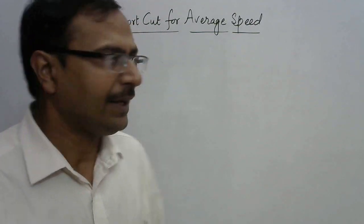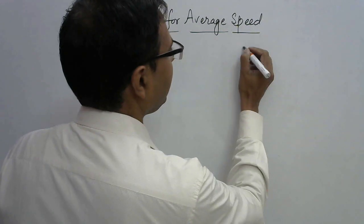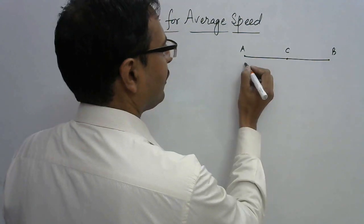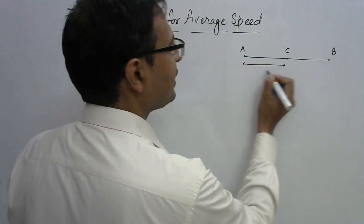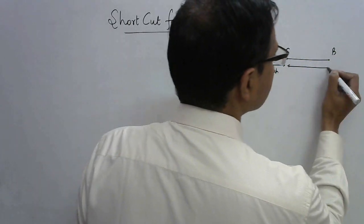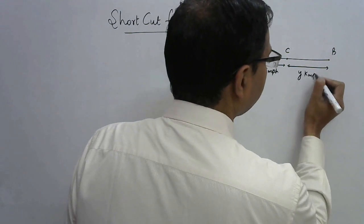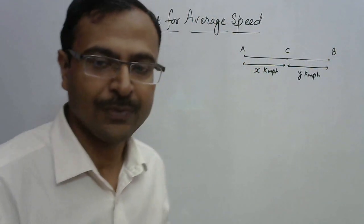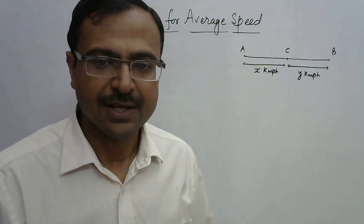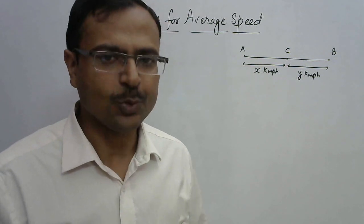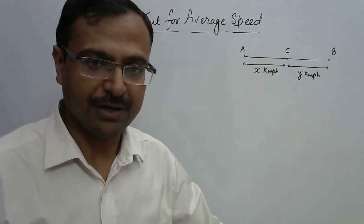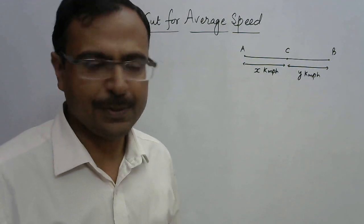For this video I am taking up the case when the distances traveled are equal. Suppose you have two points A and B and there is exactly the midpoint C. From A to C the distance is traveled at x kmph, and from C to B it is traveled at y kmph. So the distances are equal. Whenever distances traveled are equal and covered with unequal speeds, the problem is very easy to crack — you need to find the average speed of the total distance traveled.